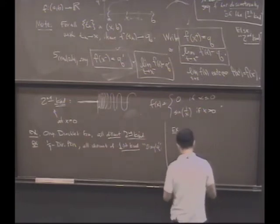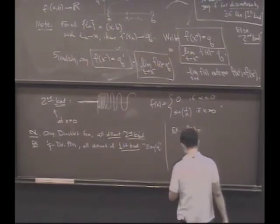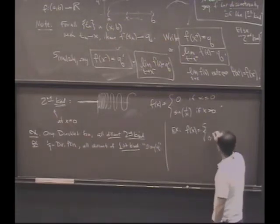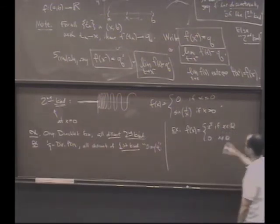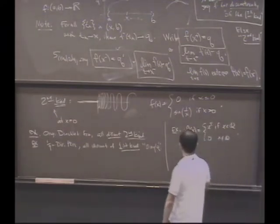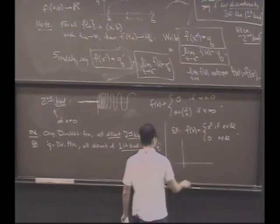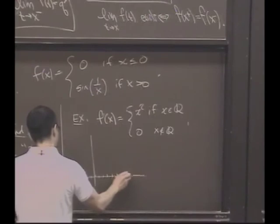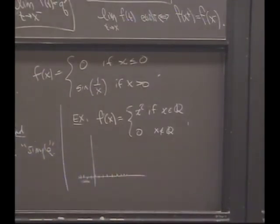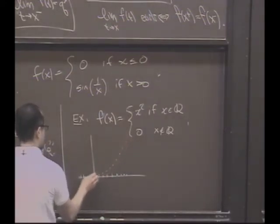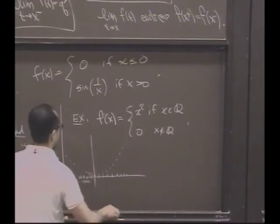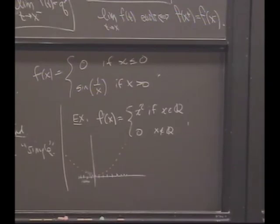Let's do another example. How about the following? We can have some fun here. How about 0 if x is irrational and x² if x is rational? What kind of function is this? So a lot of irrationals, it's 0. And if it's rational, then its value is x². So what does that look like?